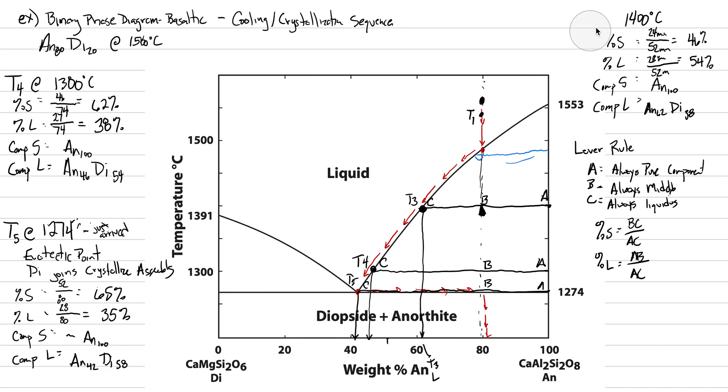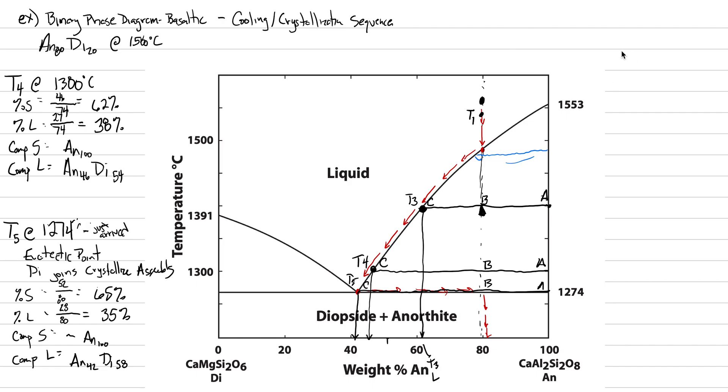We're going to let thousands of years go by. During those thousands of years, a lot of diopside is going to crystallize, and the entire rock will have become crystallized. T6 is at 1274, and we're about to depart the eutectic. We've been sitting at the eutectic for a very long time, and the entire rock is crystallized. When we depart the eutectic, we have the last drop of magma left. Everything else has crystallized.